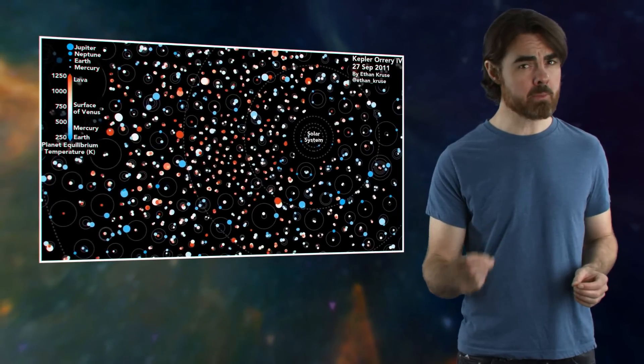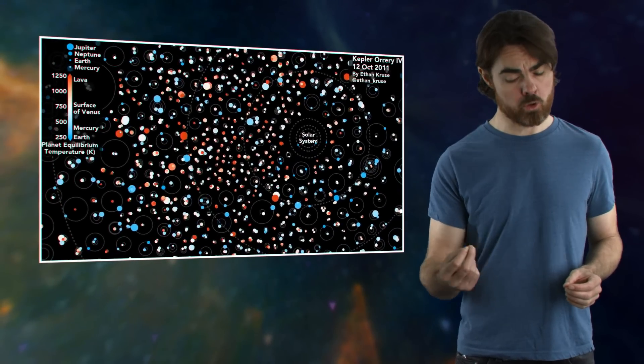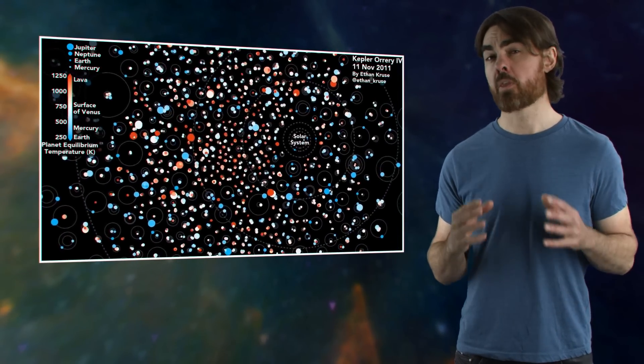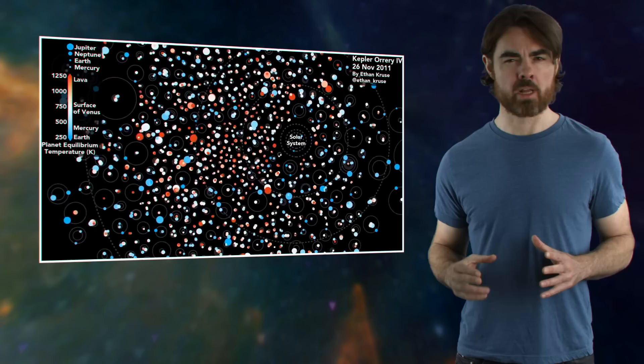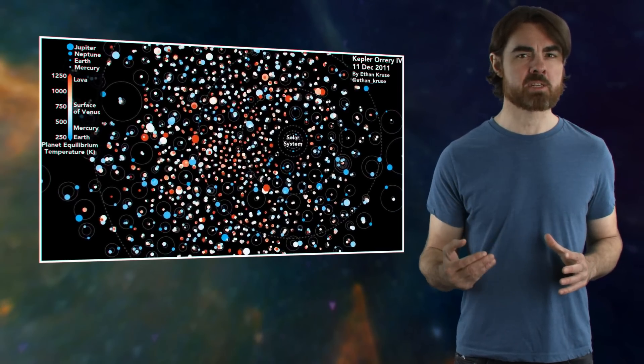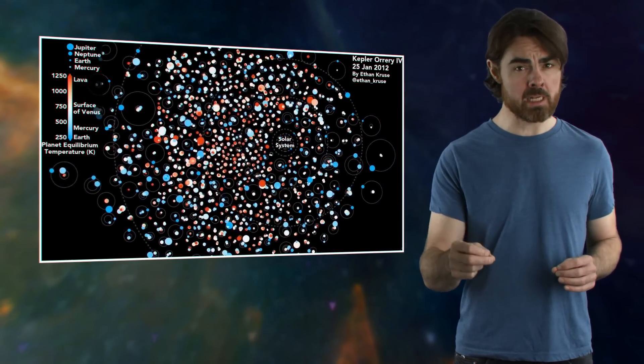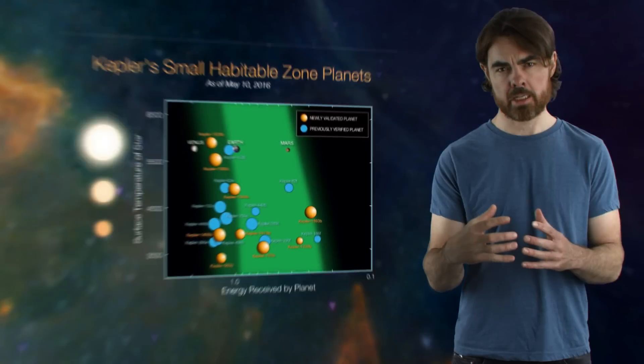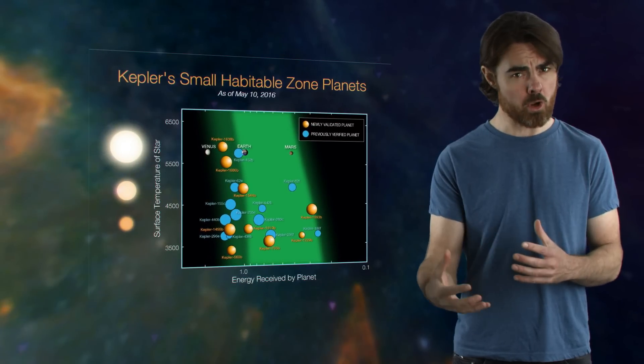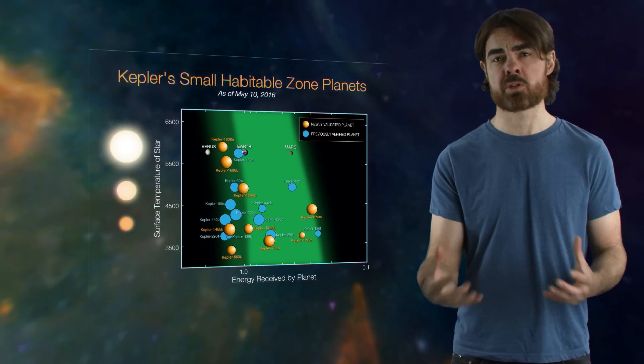The area where we've made the most progress is in the astrophysical factors. We now have a very good idea of how many planets there are in the Milky Way that could potentially support life. The Kepler mission allowed us to estimate that our galaxy boasts something like 40 billion terrestrial planets in the Goldilocks zone of their parent star.